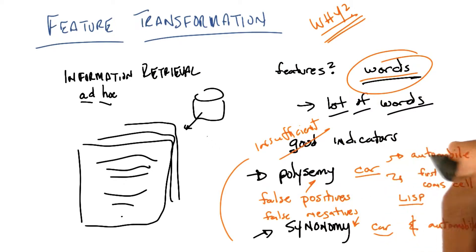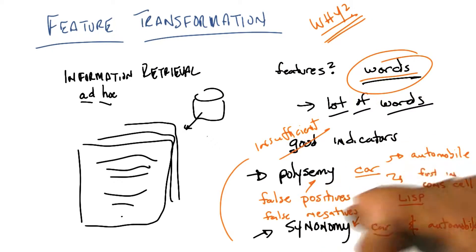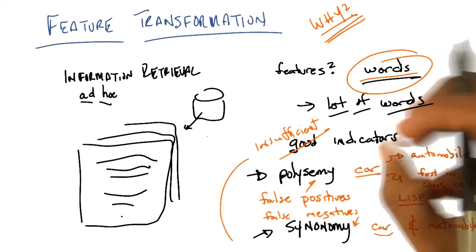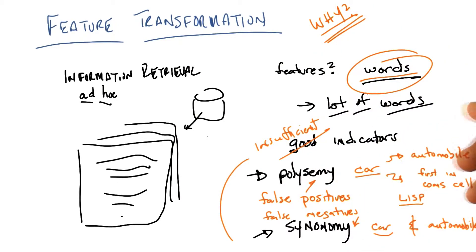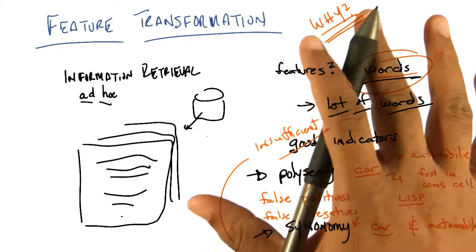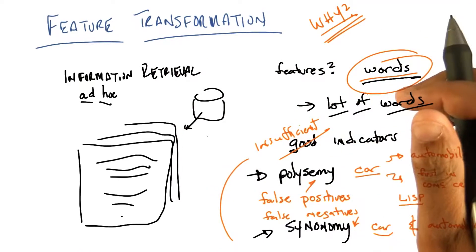And so it would make sense to combine words like automobile and car together into new features to pick up documents that are somehow related together that way. Does that make sense? So that's the intuition I want you to think of for the three algorithms that we're going to go over next.